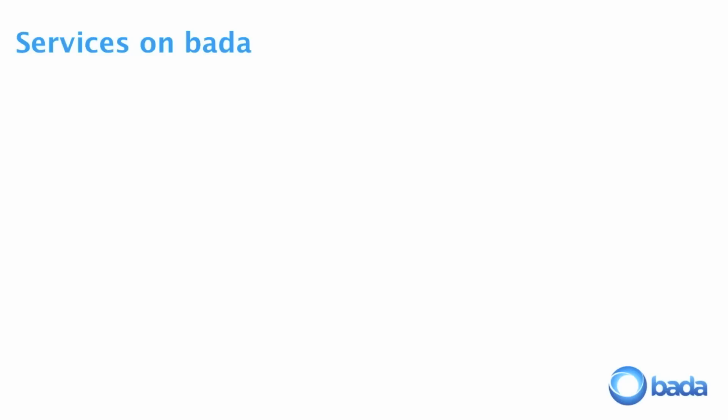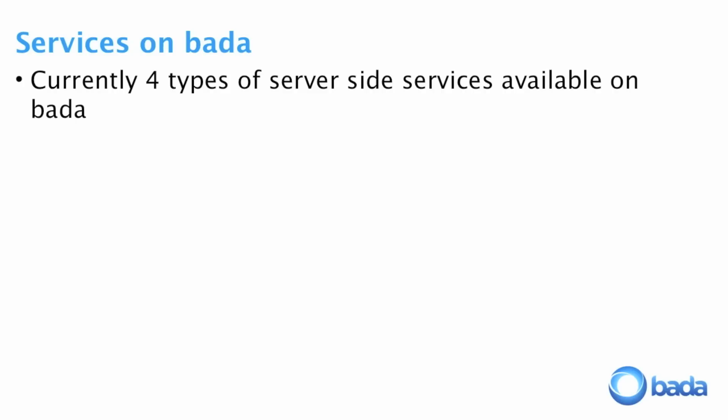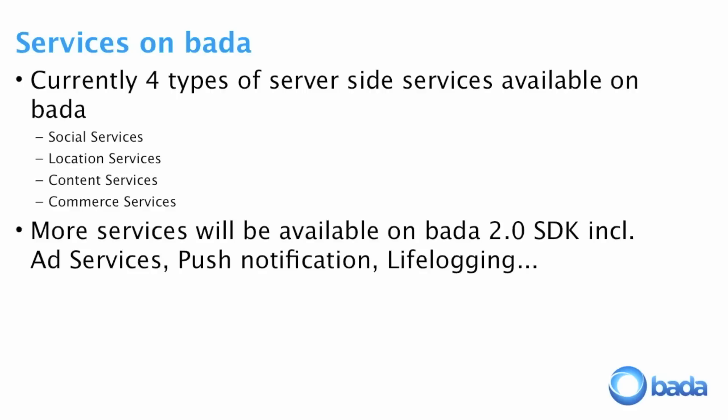Currently we have four types of services available from Bada: the first one is social service, location service, content service, and the commerce service. There are more services actually available from the Bada 2.0 SDK, for example the advertisement service, push notification, and live logging. So there are more services coming from the server side.